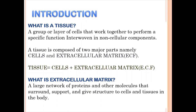So what is a tissue? A tissue is simply a group or a layer of cells that work together to perform a specific function, interwoven in non-cellular components. A tissue has two major parts: cells and extracellular matrix. So a simple definition of a tissue is just cells plus extracellular matrix.